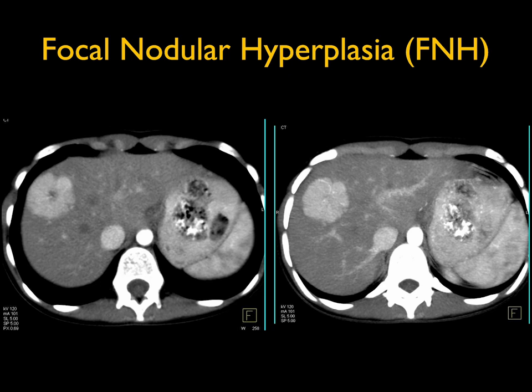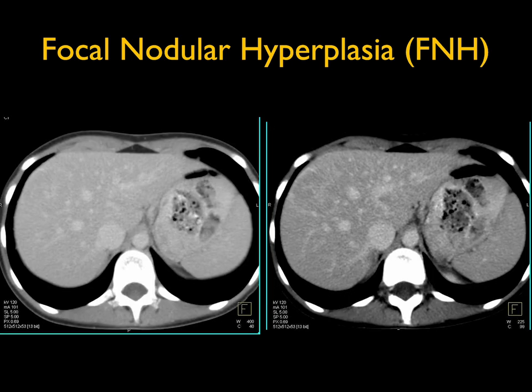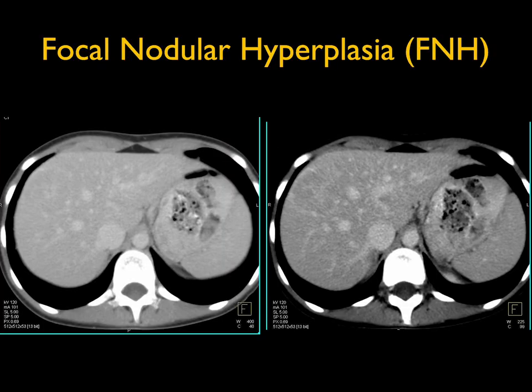A central scar is more common in focal nodular hyperplasia than in metastasis. These lesions also wash out — at about 60 to 80 seconds the lesion is almost totally gone, nearly isodense, and that is the classic appearance of FNH. On MIP imaging you can often see a feeding vessel going to the central scar, and then fairly quickly the lesion becomes isodense and nearly non-visible — consistent with focal nodular hyperplasia.